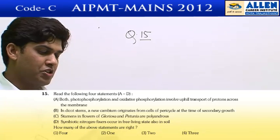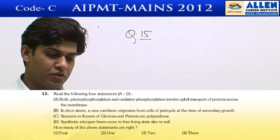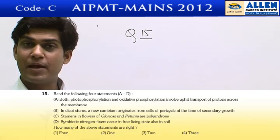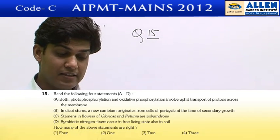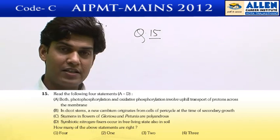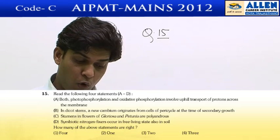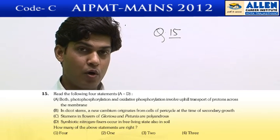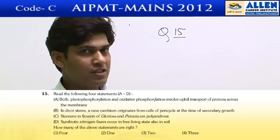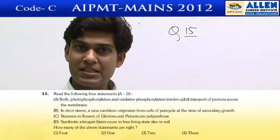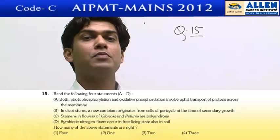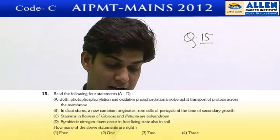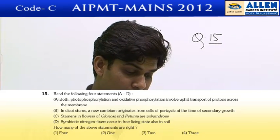In a dicot stem, a new cambium originates from the cells of the pericycle at the time of secondary growth — this is incorrect. The technical fault here is that the origin of the new cambium from the pericycle is wrong. In the case of a dicot stem, the meristem arises from the medullary rays rather than the pericycle. So statement B is not correct.